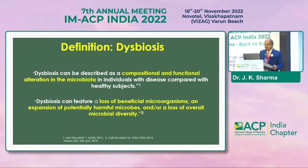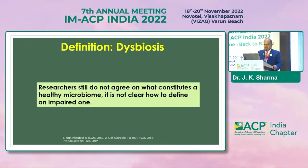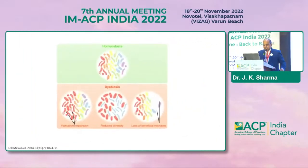Dysbiosis can feature a loss of beneficial microorganisms, expansion of potentially harmful microbes, and/or a loss of overall microbial diversity. Researchers still do not agree on what constitutes a healthy microbiome. The events that encompass dysbiosis are: loss of beneficial microbes, expansion of pathobionts, and loss of diversity.